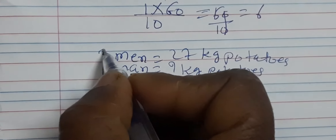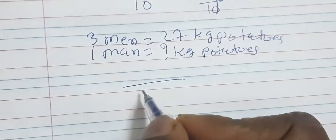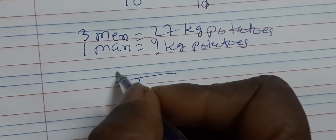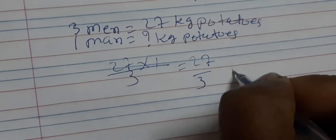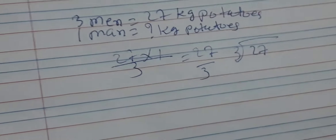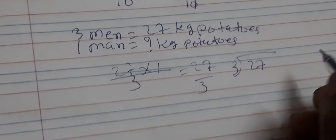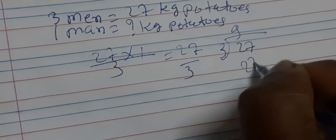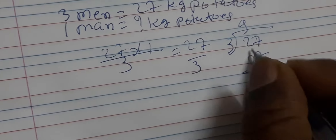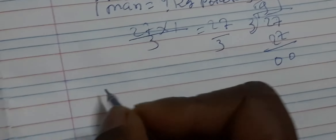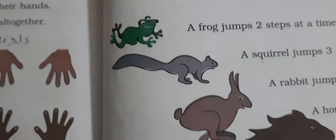Yeh ho gaya first number, yeh second, aur yeh third. Wapas division ka symbol: first number neeche, second aur third upar multiply karo. To 27 divided by 3 — 3 ka table bolo: 3 nines are 27. So 27 divided by 3 equals 9. Har ek insaan ko 9 kg potatoes milenge. Yeh aapka answer hai.